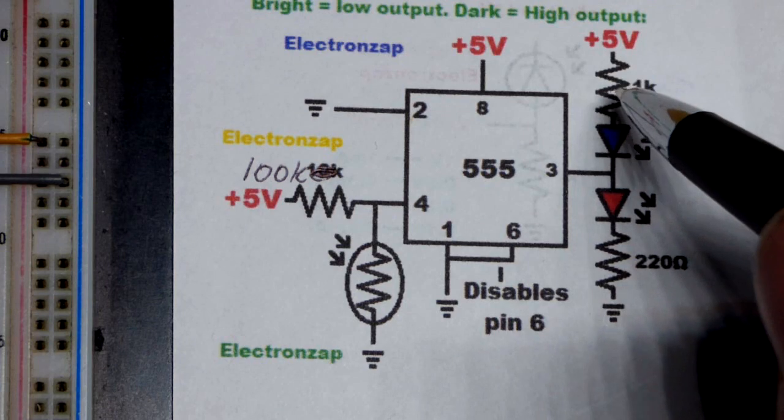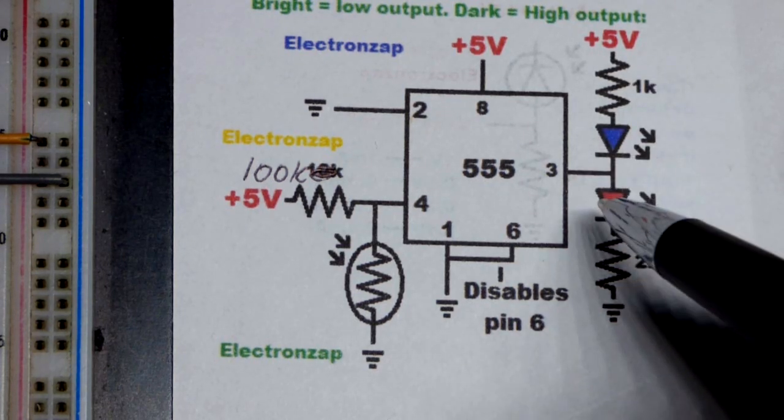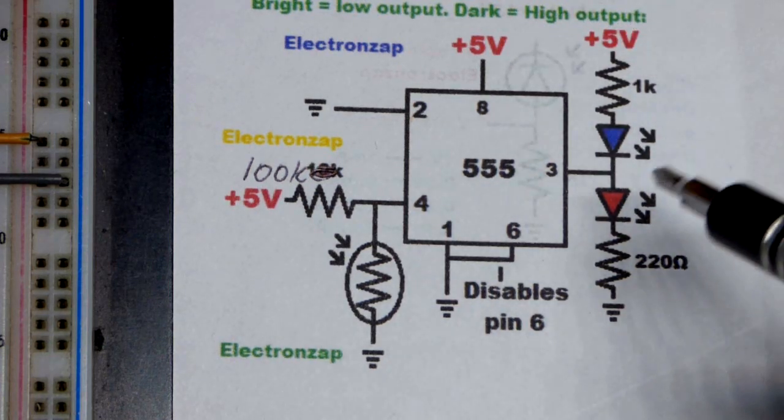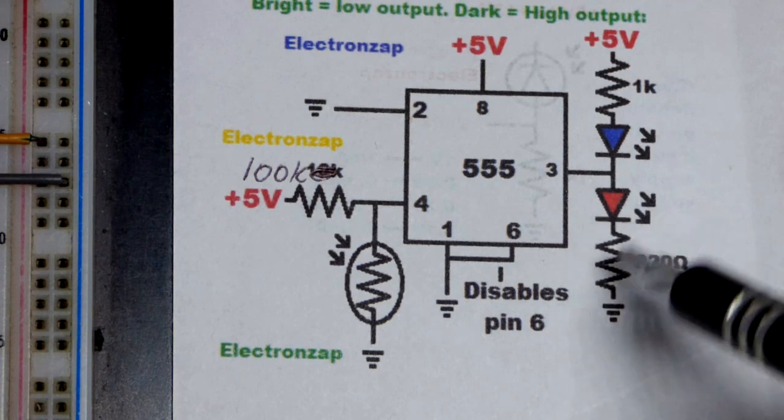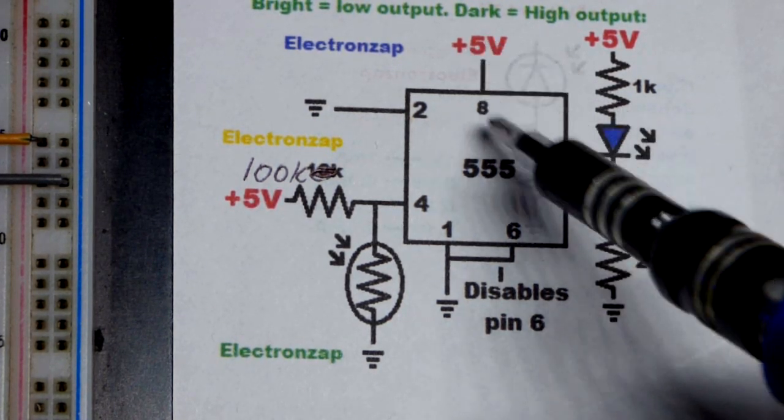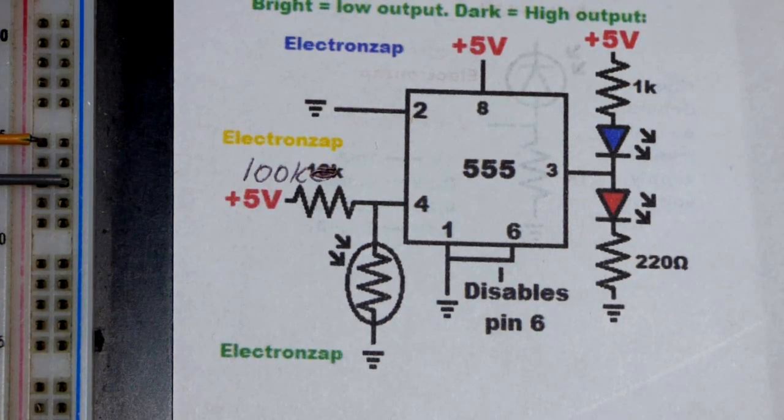I used a 1k resistor because blue LEDs are brighter than red LEDs at the same current. The blue LED drops more voltage, and a higher resistor will give it a lot less current than the red LED. But in this case, with 220 ohms protecting the red LED and the drop voltage there, they're similar in brightness.